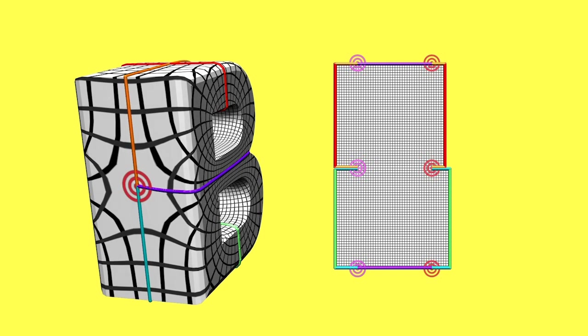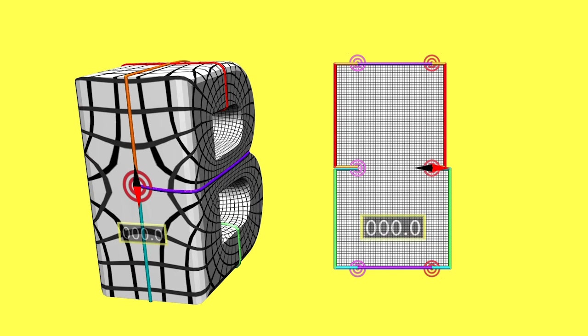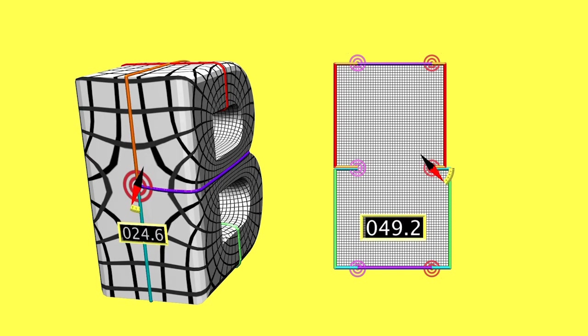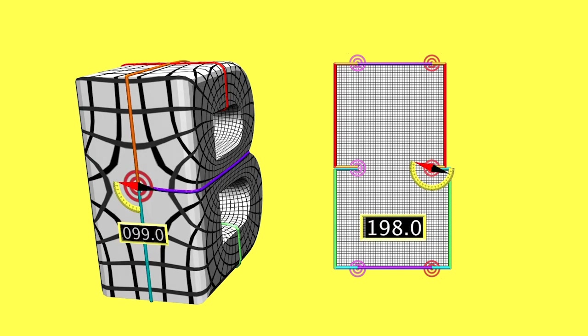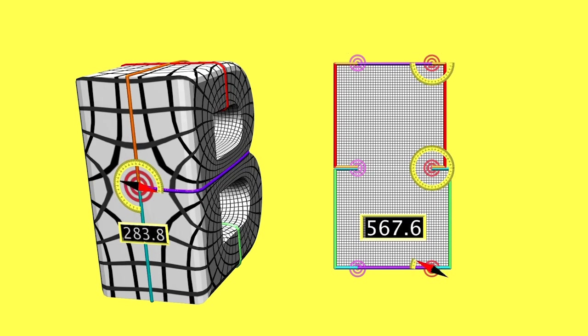The branch points are said to be of order two, since at these points, instead of preserving angles, the map doubles them.